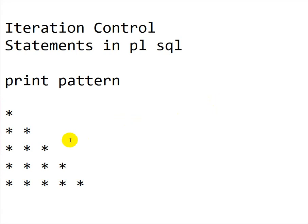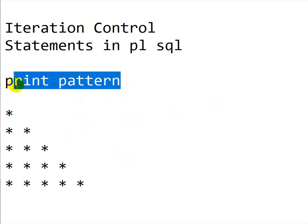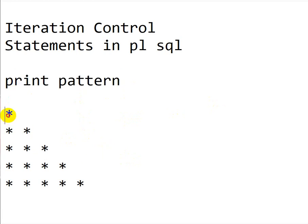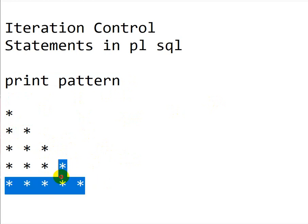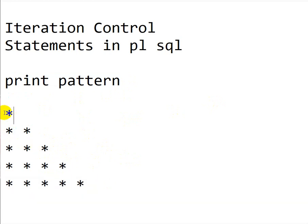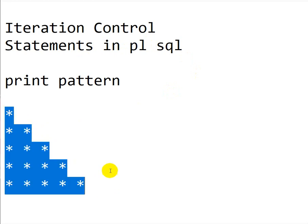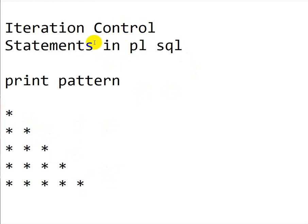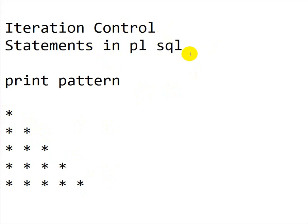Hello everyone, today we are going to see how to print a star pattern in PL/SQL. First one star, then two stars, up to five stars, incrementing by one each row. For this you should have knowledge of iteration control statements in PL/SQL, specifically the FOR loop. I have already created a video on this — you can watch it in the PL/SQL playlist, link in the description.